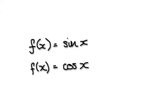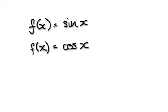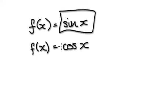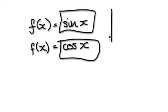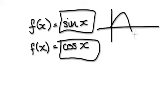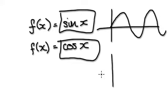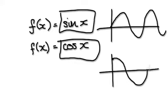In the last several videos we've been trying to understand sine of x and cos of x. It turns out that sine of x gives us a wave-like graph looking something like this, and cos of x is the same thing but it starts up here, giving us something like this.